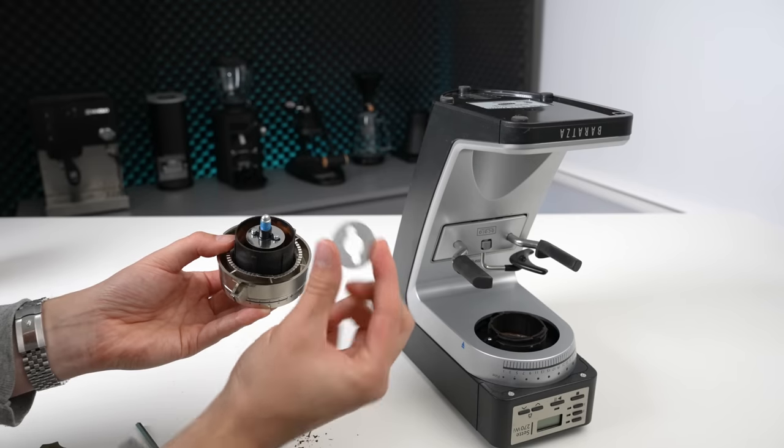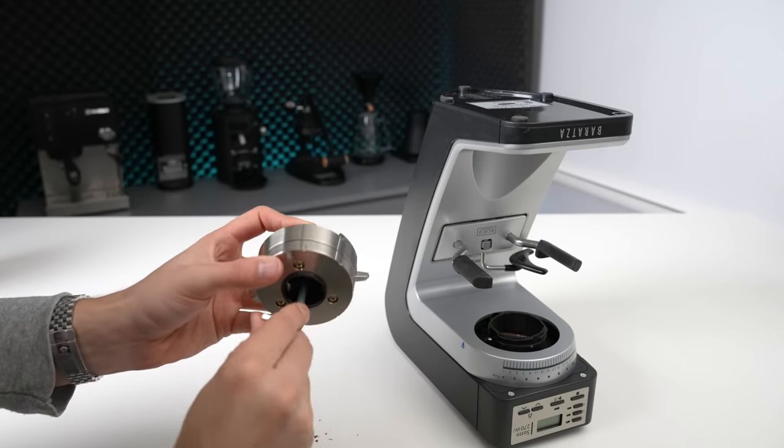In order to grind fine enough for espresso, I did have to install two of the included shims. Luckily that process was pretty straightforward and the required allen key was included.